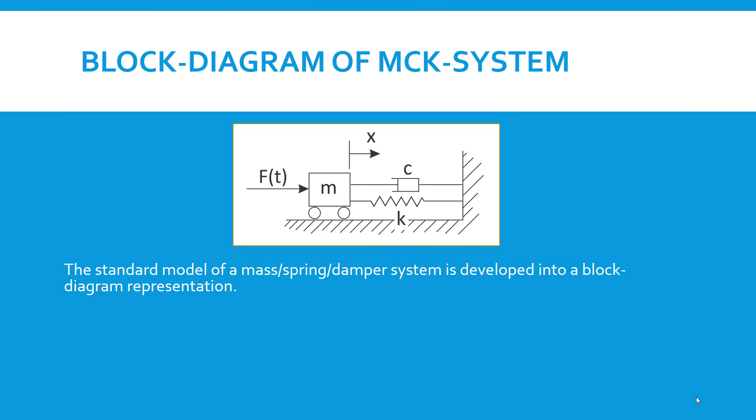We start off with a standard model of an MCK system. We have a mass that can move horizontally right and left, attached to a fixed base by a spring and damper. We measure the displacement of this mass, which is what we're interested in. The mass can also have imposed on it an external force.